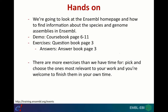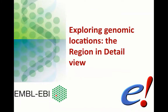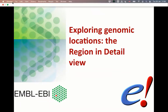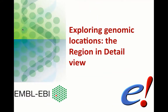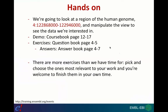In the next part of this module, we're going to begin exploring the Ensembl Genome Browser itself — specifically a page called the Region in Detail. We're going to look at a region on chromosome 4 in the human genome with specific coordinates, and then manipulate the view to see data in relation to this region of interest. If you're following along in the course book, screenshots start on page 12.